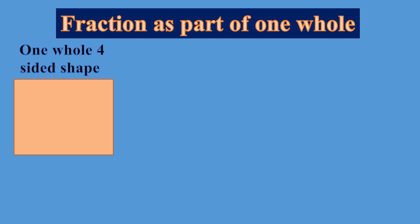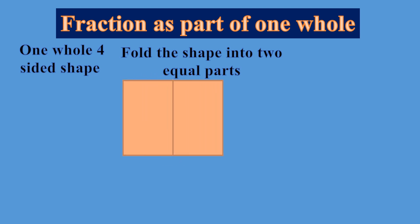For that, take one whole four-sided shape. This is a rectangle where opposite sides are equal. You can watch class 1 video on shapes to learn more. Now fold this shape into two equal parts. When you fold it, you can see there is a mark here that is known as a crease. Now cut along the crease with the help of scissors.